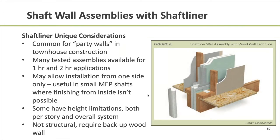Speaking of shaft liner systems: the two layers of gypsum in that teal color in the middle of the wall assembly are the two shaft liner panels. Each is one inch thick, typically fabricated in 24-inch widths. These are very common in townhouse design, used at unit separation or party wall construction. Two layers of this panel give a two-hour fire resistance rating; one layer gives one hour. They're a non-structural wall — really only intended to carry their own self-weight, with some limitations — and they have clip angles that attach to the adjacent wood structural wall, which braces the shaft liner panels in their out-of-plane direction.